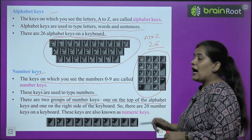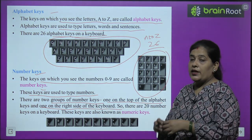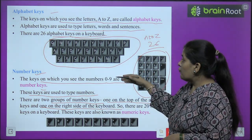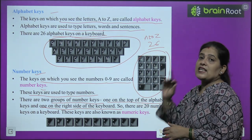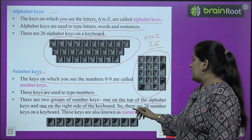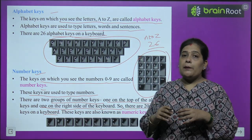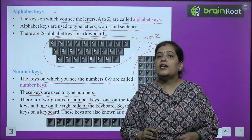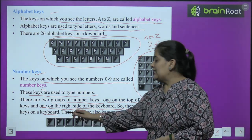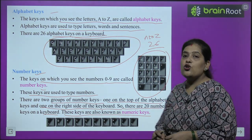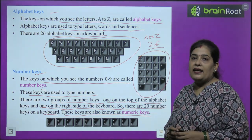One group is on the top of the alphabet keys, and one is on the right side of the keyboard. There are 20 number keys on a keyboard in total. These keys are also known as numeric keys.